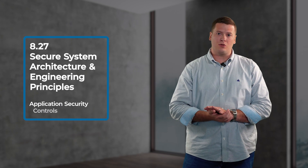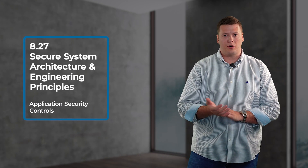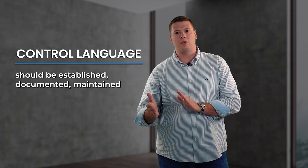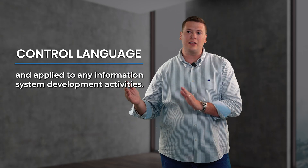The next control is 8.27, secure system architecture and engineering principles. This is really more about training. The control reads: principles for engineering secure systems should be established, documented, maintained, and applied to any information system development activities. What that means is people involved in building any type of new information systems or adjusting existing ones need to be given proper documentation and guidance that can be evidenced to an auditor to show that they are following secure system architecture and engineering principles. What those are is up to you — you can do this in-house or outsource it to another firm to help train your team.